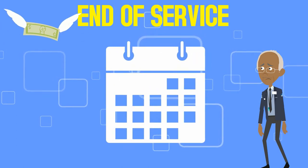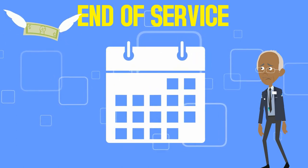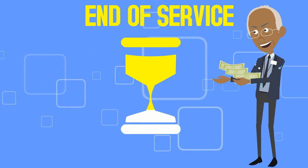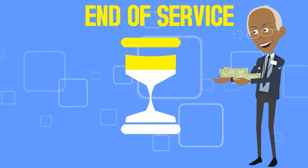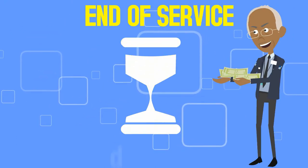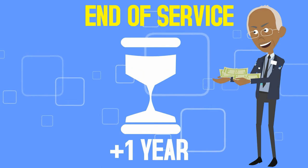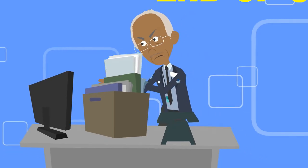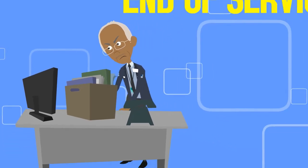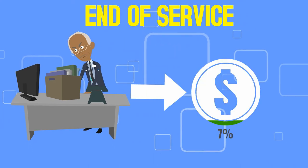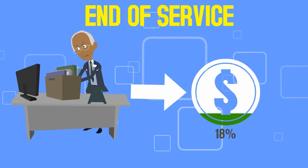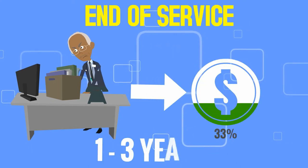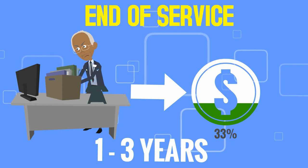For instance, a permanent employee who worked for up to one year gets his end-of-service once he leaves his job. But a permanent employee who quit his job gets only one-third of the end-of-service amount in the case he worked less than three years.